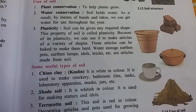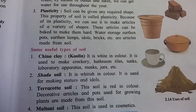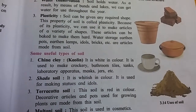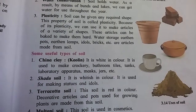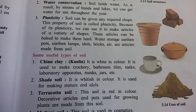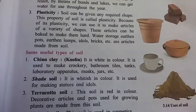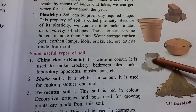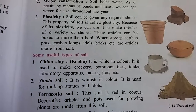Some useful types of soil: First is china clay. It is white in color and is used to make crockery, bathroom tiles, tanks, laboratory apparatus, masks, jars, etc. For example, cups and saucers in our daily life are made from china clay.